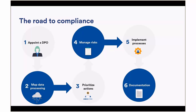Step two is mapping your data processing, defined in Article 4 Section 2: processing means any operational set of operations performed on personal data. You need to identify the key elements and describe the information flow — when you collect the data, what you do with it, how you manage it. Step three is prioritizing actions: where you have collected data, identify and prioritize the actions needed to comply with GDPR and other privacy laws.